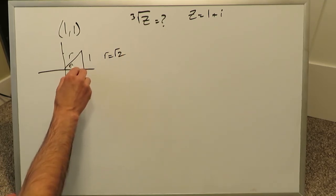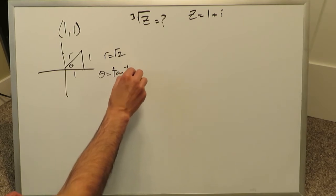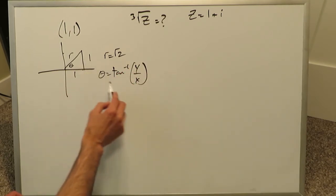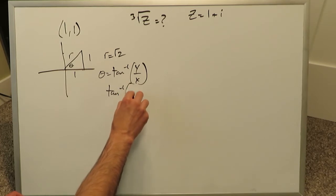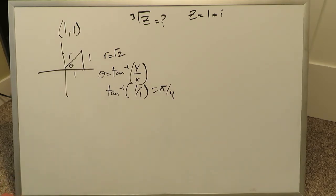You have to find the argument, which is your theta. Theta is always equal to inverse tan y over x, the y value divided by the x value, which would be here inverse tan or arc tan 1 over 1, or arc tan of 1, and you know that happens to be pi over 4. Now we have everything we need to convert this general form into the polar form or the trigonometric form.